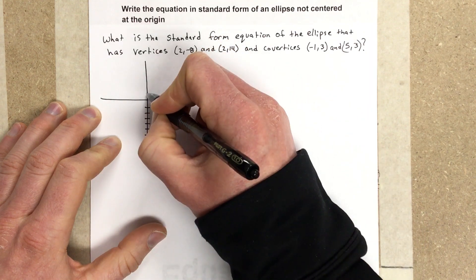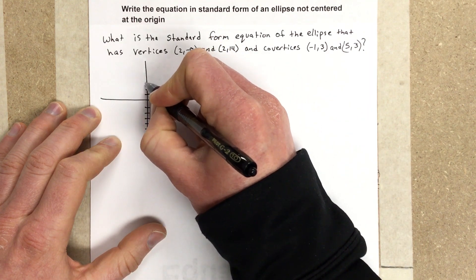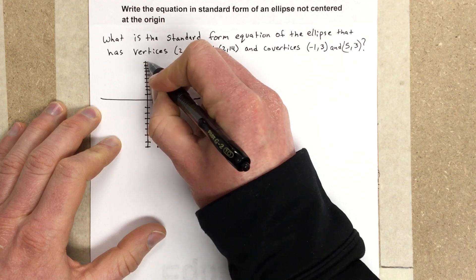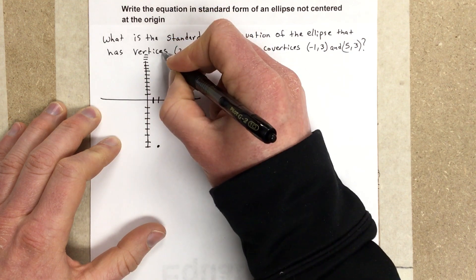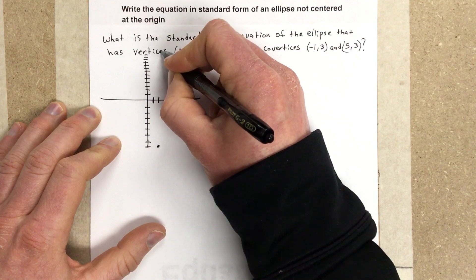And then I have (2, 14). So 1, 2, 3, 4, 5, 6, 7, 8, 9, 10, 11, 12, 13. We'll go 14, it's about right here. So let's put a dot there.